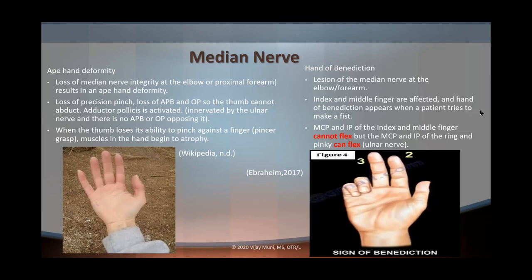Now let's talk about ape hand deformity. Ape hand deformity is when a person loses precision pinch because of the loss of the abductor pollicis brevis and opponens pollicis, so the thumb cannot abduct. Remember the adductor pollicis, which is innervated by the ulnar nerve, is going to take over because there's no thumb abductor muscle working. The adductor pollicis will force the hand toward adduction, and when the thumb loses its ability to pinch against the finger, the muscles in the hand begin to atrophy.